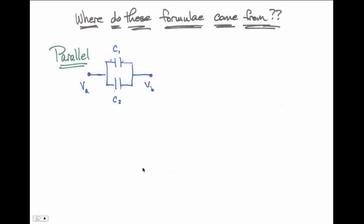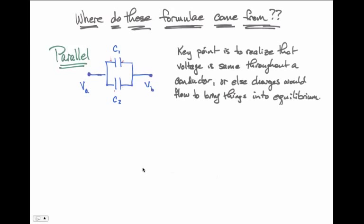the thing to remember here is that the voltage is the same throughout a conductor. Otherwise, charges would move. So the voltage is the same here or here or here. Anywhere along my cursor is the same voltage.